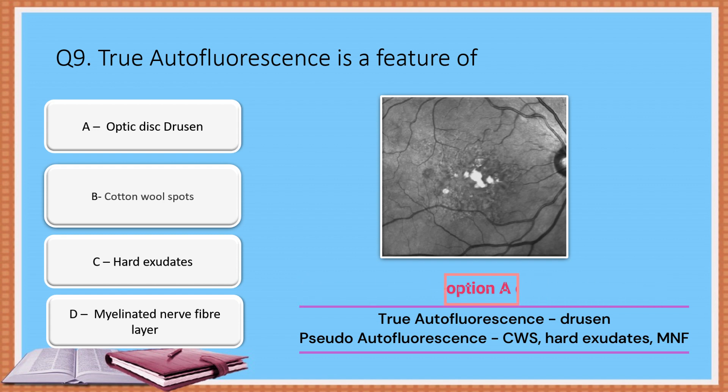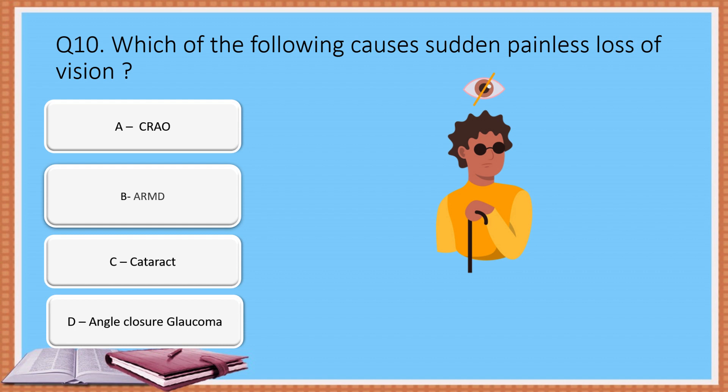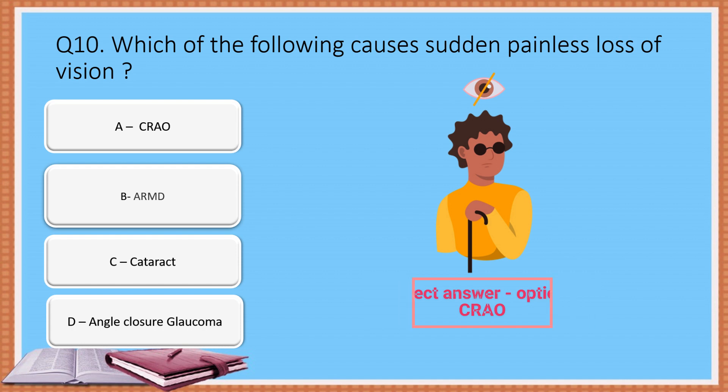Or cotton wool spots. Tenth question: Which of the following causes sudden painless loss of vision? Option A: Central retinal artery occlusion. Option B: Age-related macular degeneration. Option C: Cataract. Option D: Angle closure glaucoma. The correct answer is Option A: Central retinal artery occlusion.